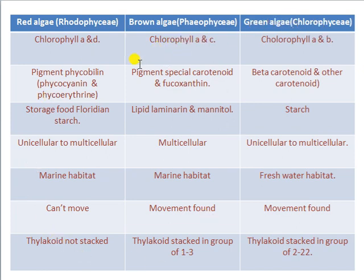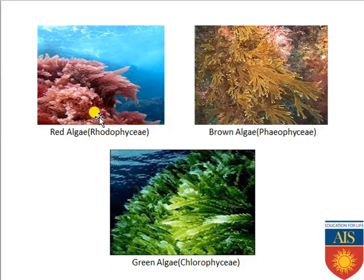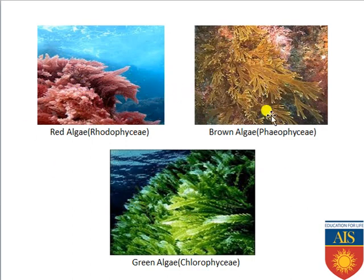This is the overall comparative study between red algae, brown algae, and green algae based on various features. In the next slide you can see figures of the algae — Rhodophyceae (red algae), Phaeophyceae (brown algae), and Chlorophyceae (green algae) which is present in freshwater, while the other two are commonly in marine water.